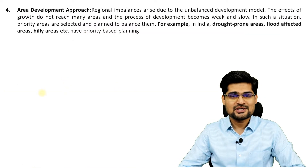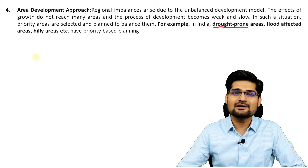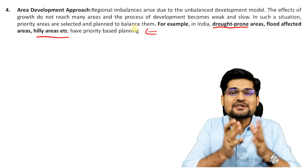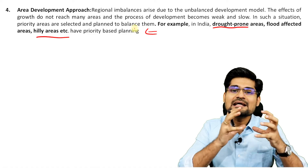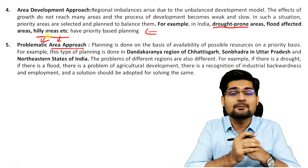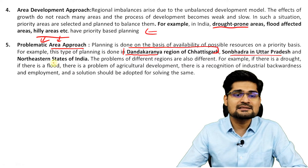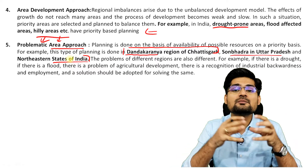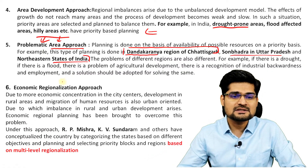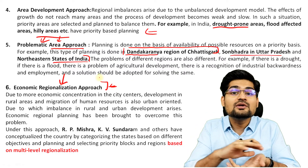The area development approach is based on the distinction of an area — drought-prone areas, flood-prone areas, hill area development, and tribal area development. These programs have been part of India's five-year plans under the Planning Commission. The problematic area development approach links area development to a particular problem — for example, economically weaker regions like Dandakaranya in Chhattisgarh, Sonbhadra in Uttar Pradesh, and the northeastern states of India, identifying human development problems and planning for them.